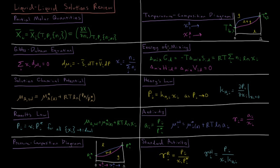When we mix two substances together, if the solution is behaving ideally, the Gibbs energy change during that process is negative temperature times the entropy of mixing, which equals RT times the sum over all components of the number of moles times the natural log of their mole fraction. For ideal solutions, the enthalpy of mixing and the volume change of mixing are both equal to zero.